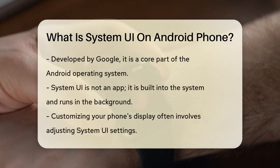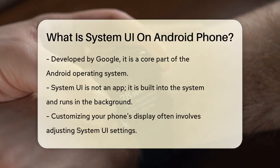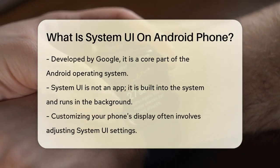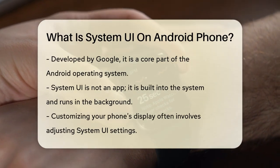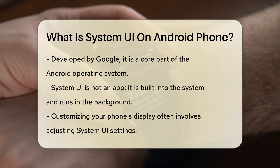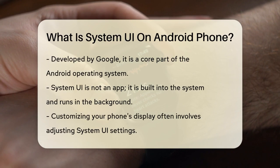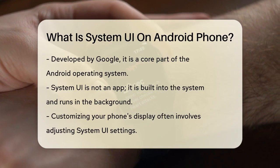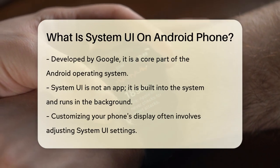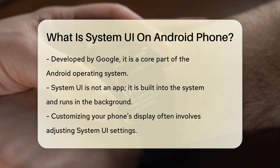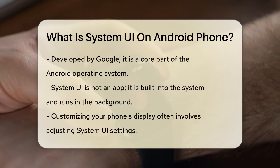Developed by Google, System UI is a legitimate part of the Android operating system. It's not an app you can download or install — it's built into the system itself. This means it's always running in the background, managing the visual aspects of your device.